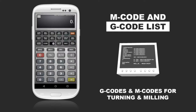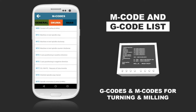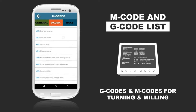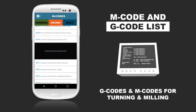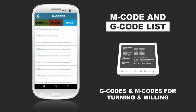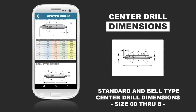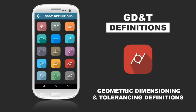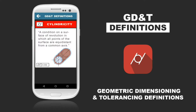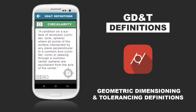It also includes GD&T, hole pattern calculators, drill and tap charts, surface finish calculators, thread pitch charts, center drill data, unit converters, hardness conversions, G-codes and M-codes, and machinability and cutting speed data for over 170 materials.